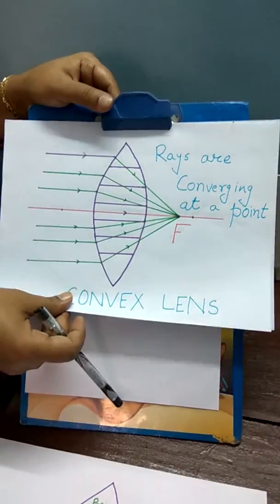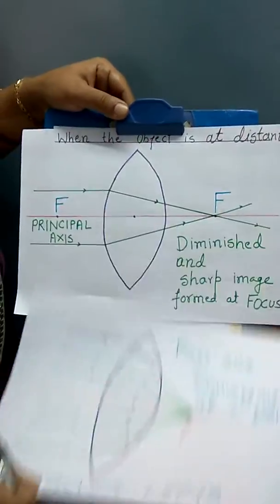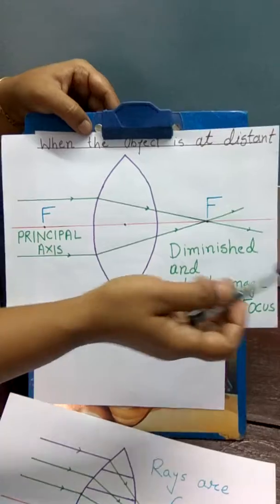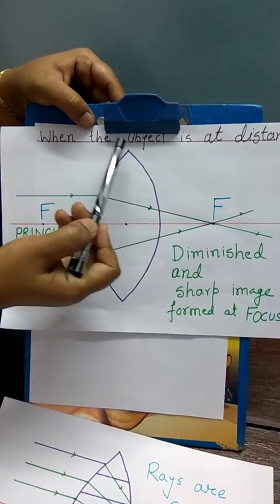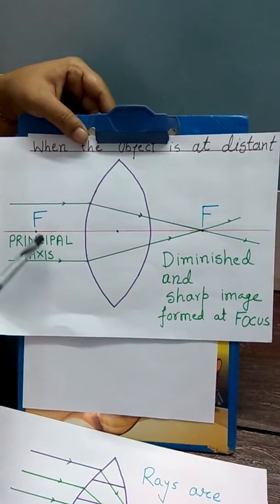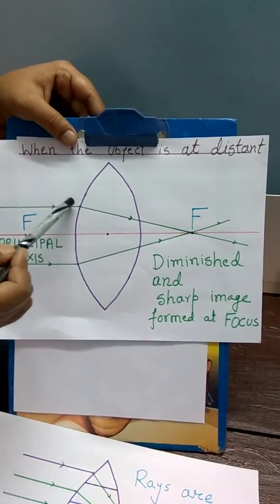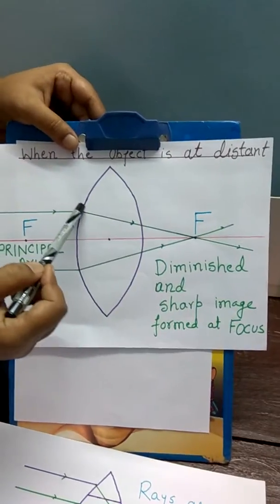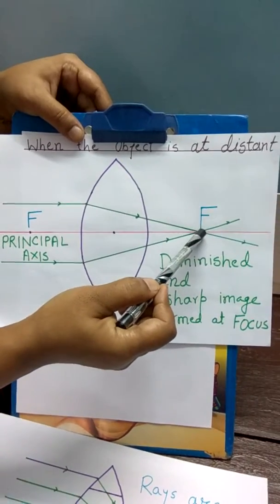In the next diagram we will see how to calculate focal length of a convex lens. I have used a method in which object is at a distance. These are the two parallel rays of light which are falling on the surface and after that they converge at a point.